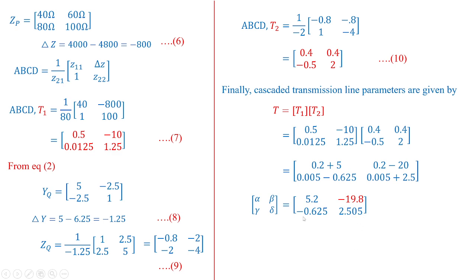So the resultant would be that is taken as the value of R or T what we say we are going to get as 5.2 minus 19.8 minus 0.625 and 2.505. So this is the values obtained of the cascade connection and the beta value according to the ohms is obtained as minus 19.8 ohms.